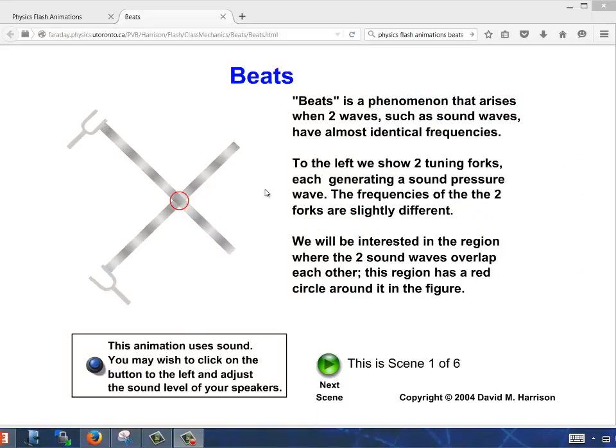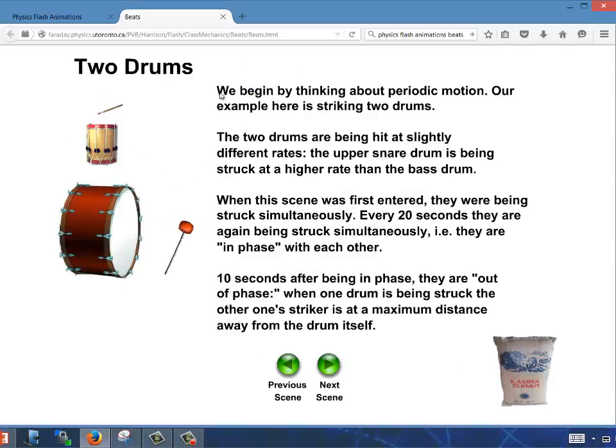Beats is a phenomenon that arises when two waves, such as sound waves, have almost identical frequencies. So here's two tuning forks, each generating a sound pressure wave, and the frequencies of these two forks are slightly different. We are going to be interested in the region right here in the red circle where the two sound waves overlap each other. So we begin by thinking just about periodic motion.